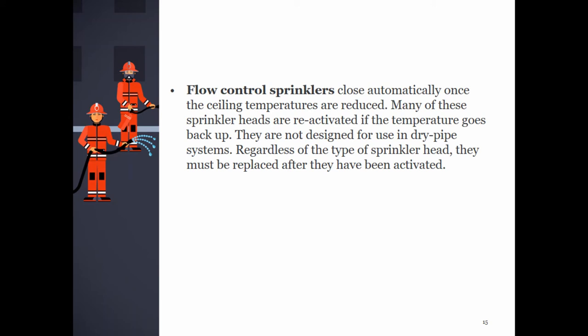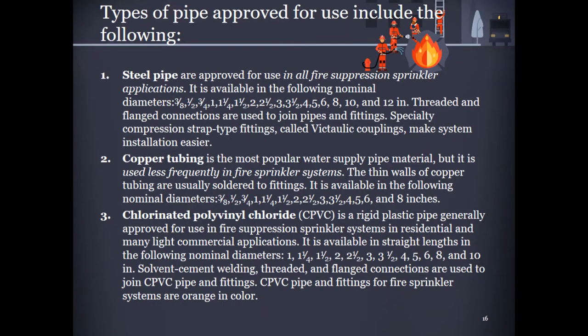Sprinkler heads must be replaced after they have been activated. Types of pipe approved for use include: Steel pipe — approved for all fire suppression sprinkler applications; threaded unflanged connections join pipes and fittings, and specialty victaulic couplings make installation easier. Copper tubing — the most popular water supply pipe material but used less frequently in fire sprinkler systems; thin walls are usually soldered to fittings. Chlorinated polyvinyl chloride (CPVC) — a rigid plastic pipe generally approved for residential and many light commercial applications; solvent cement welding, threaded, and flanged connections are used. CPVC pipe and fittings for fire sprinkler systems are orange in color.